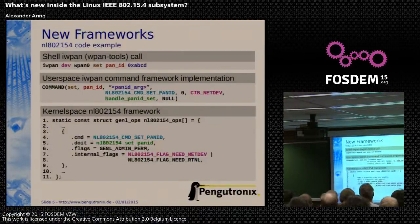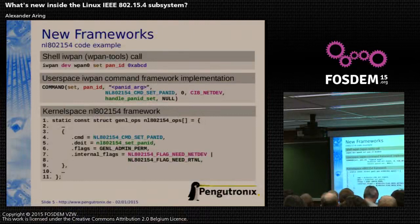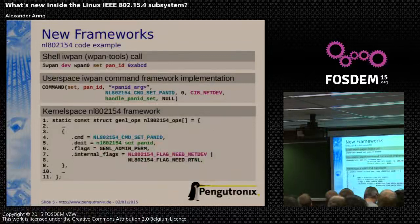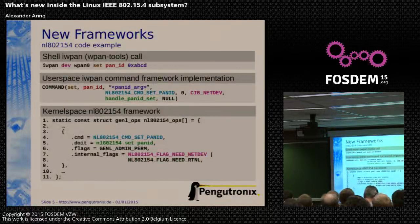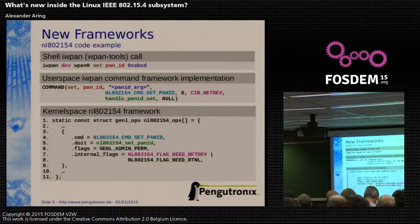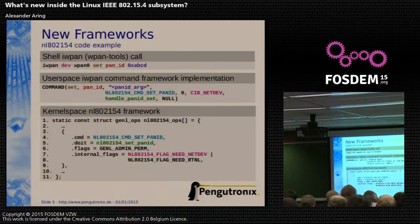Here's a code example showing the calling chain from a user space shell into kernel space. This example shows the pan ID. I colored the relationship between each flag — for example, the CIB_NETDEV flag requires a dev argument. In the kernel space implementation there is also a flag NL_NEED_NETDEV, so you need to type dev from the user space side. The green ones are for callback functions to set and get the netlink attributes — in this case the pan ID number.